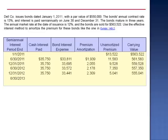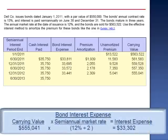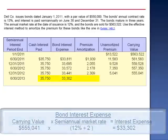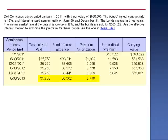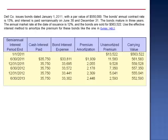June 30, 2013: cash interest paid $35,750. Bond interest expense is equal to 6% of $555,041, which is $33,302, and the premium amortization is $2,448. The unamortized premium drops to $2,593 and the carrying value drops to $552,593.